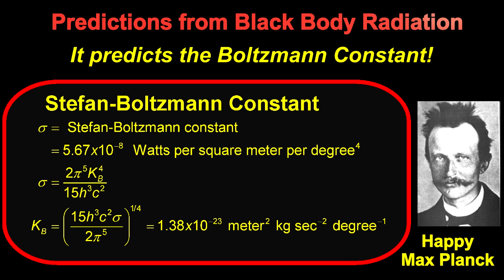Now he had a formula for the Stefan-Boltzmann constant. Since the Stefan-Boltzmann constant had been previously measured, Max Planck could solve for the value of the Boltzmann constant, which had not been measured — not even by Dr. Boltzmann himself. He got that the Boltzmann constant was 1.38 times 10 to the minus 23rd in MKS units. Thus, in 1900, Planck's black body theory provided the best value for Boltzmann's constant, which is a key to many more predictions.